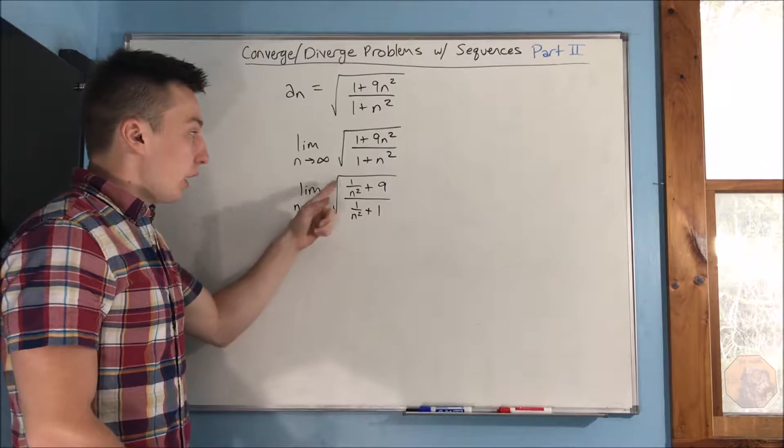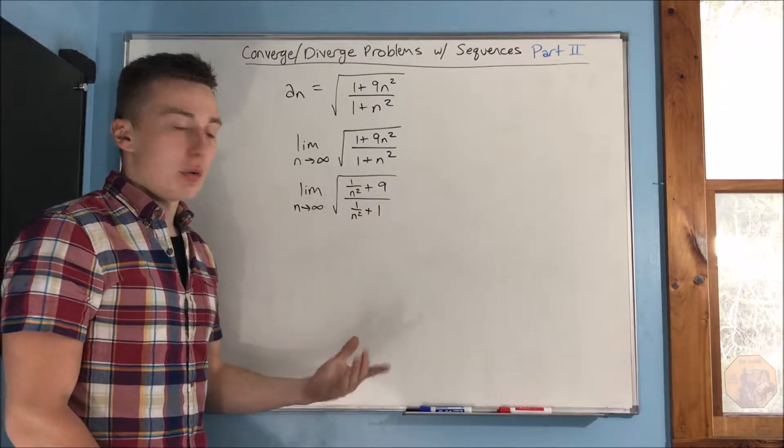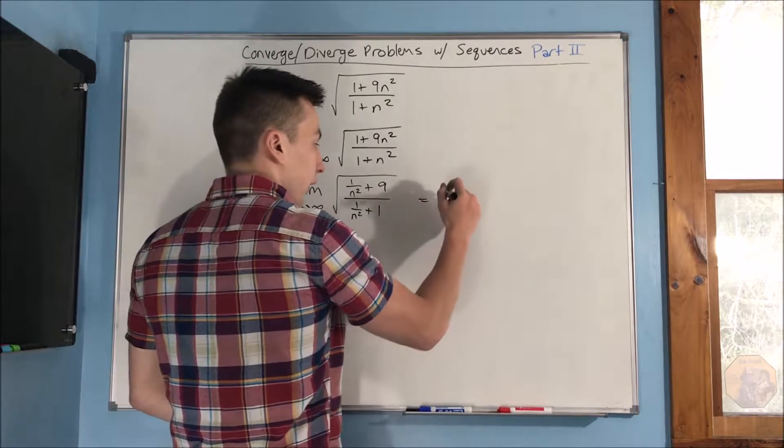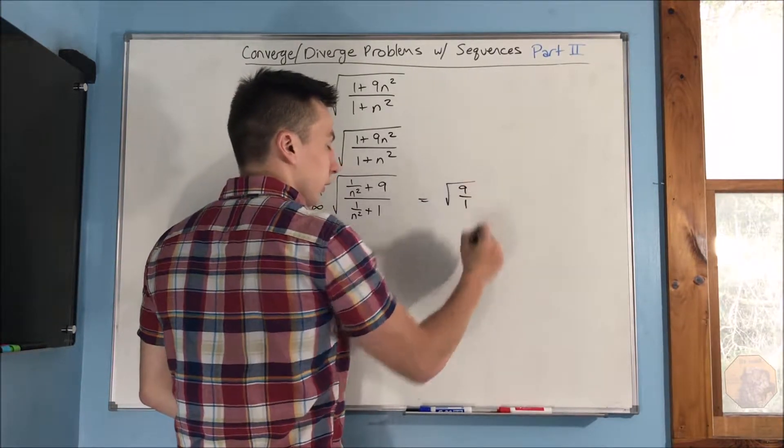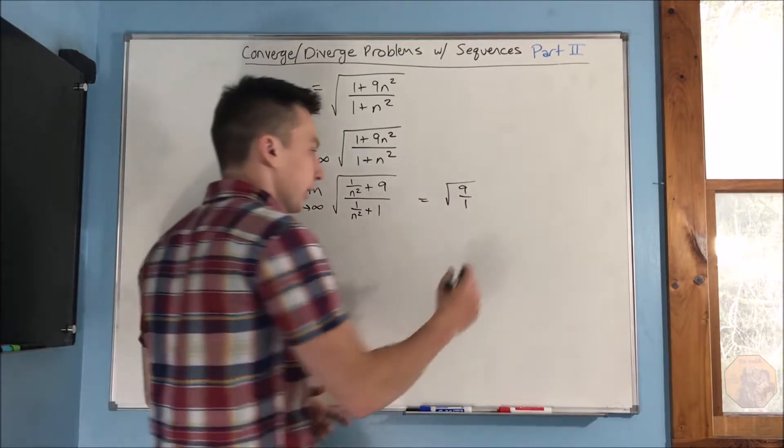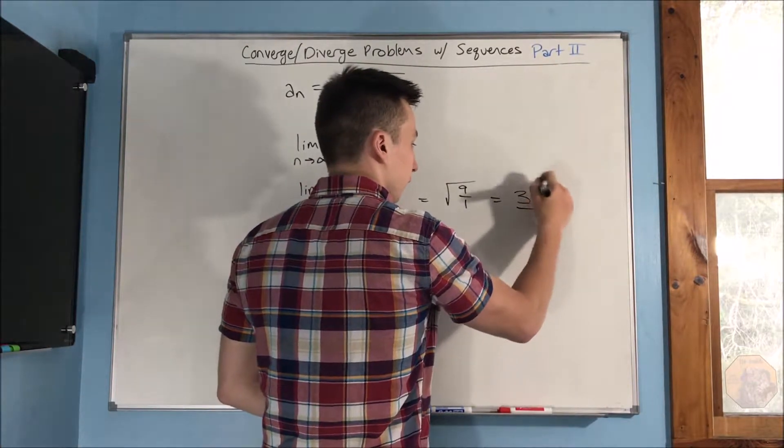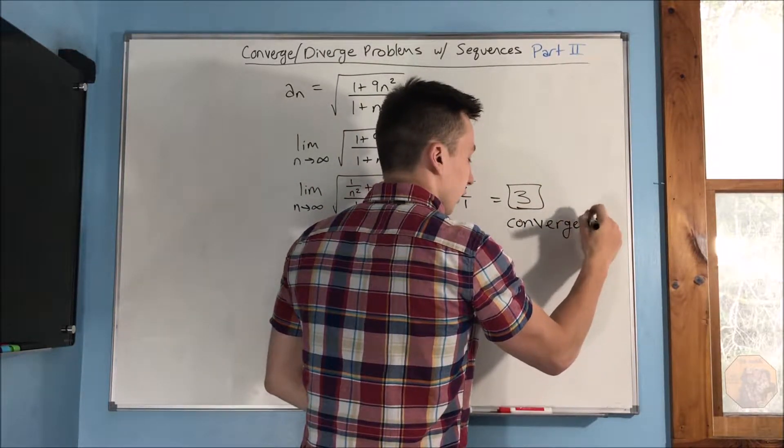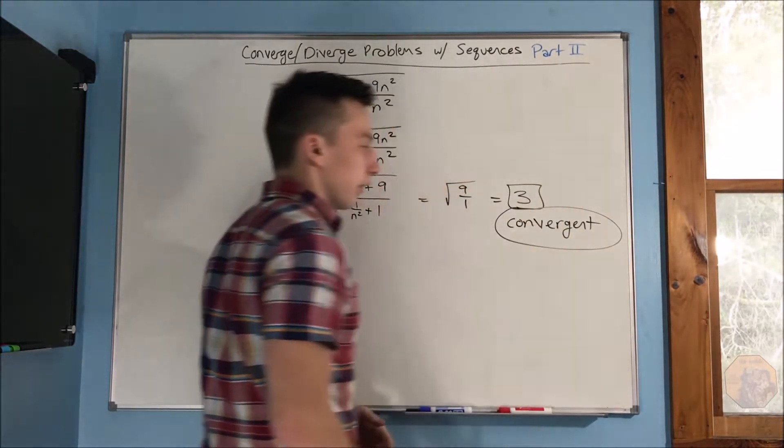Because as n approaches infinity, 1 over n squared, that's going to be 0. Okay, so we're going to get a 0 here and a 0 here. You'll be left with root 9 over 1, right? You should have that 9 on the top, the 1 on the bottom. And of course, we just know that that is 3. Okay, so this sequence is convergent.